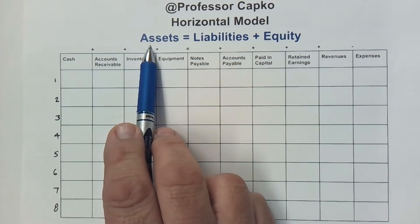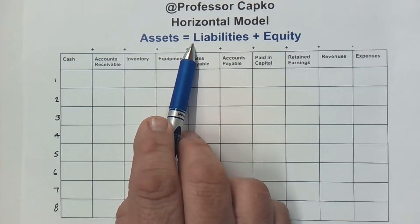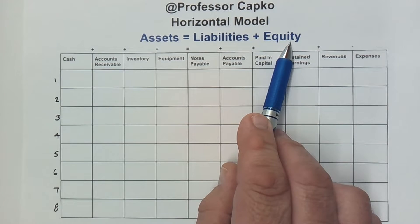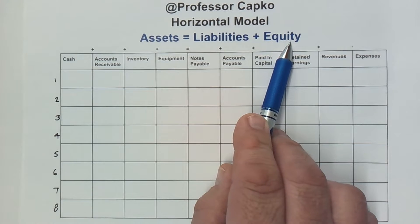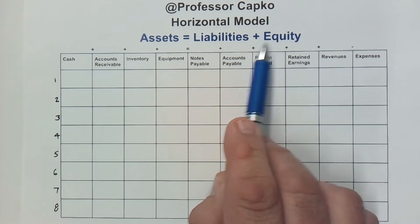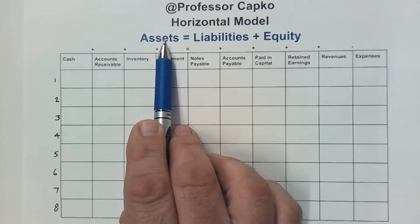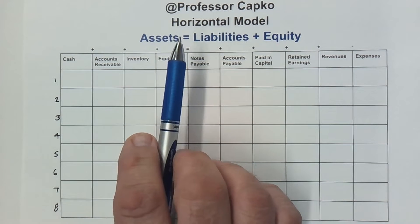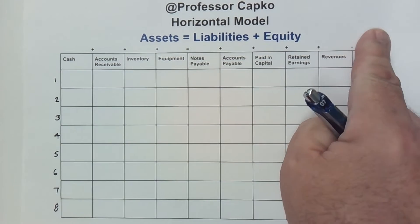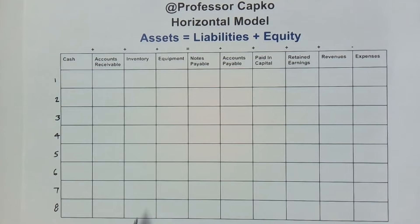First of all, we have the fundamental accounting equation: assets must equal liabilities plus equity. This equity could be called shareholders equity or stockholders equity — it's the equity in the company, and these two added together equal the assets. If you need a primer on the accounting equation, I've got a link in the corner that you can click on.